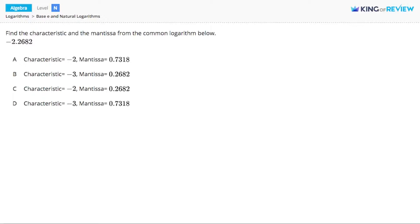Hi! This is King of Review. In this problem we need to find a characteristic and a mantissa from this log, negative 2.2682.